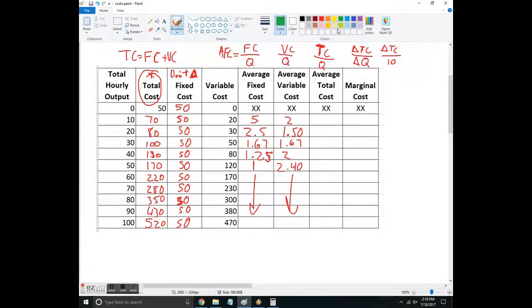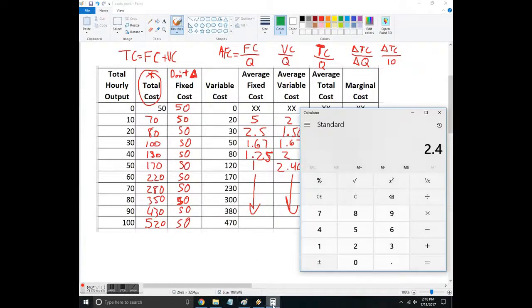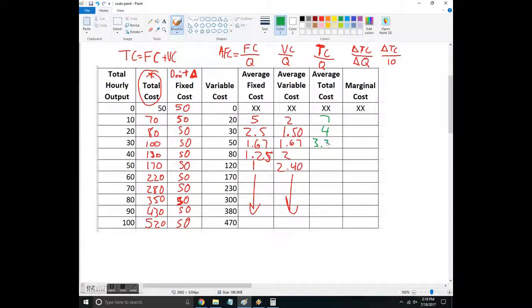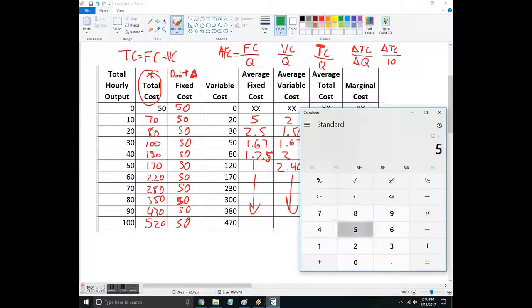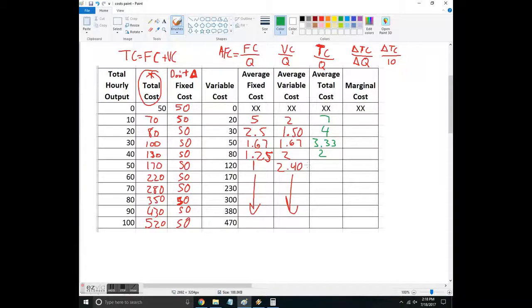Average total cost. So now we're using this column here. So average total cost, 70 over 10, so that's seven. Then 80 over 20 is four. 100 over 30, which is really 10 over three is 3.3, so $3 and 33 cents. Then I got 80 over 40, so that's two. I got 120 over 50 or 12 over five. I saw that before that was 2.4. So you can keep doing these and derive all those.